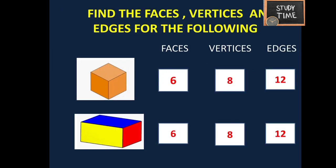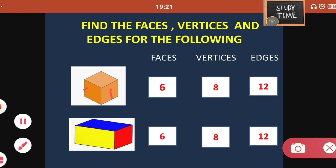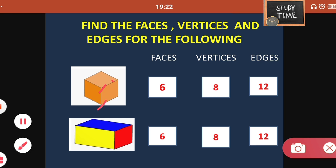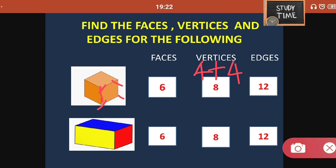Next, find the faces, vertices, and edges for the following. A cube and cuboid are given. A flat surface is called a face — a cube has 6 faces. The meeting point is called a vertex — a cube has 4 plus 4, that is 8 vertices. The connecting lines are called edges — a cube has 4 plus 4 plus 2 plus 2 edges.